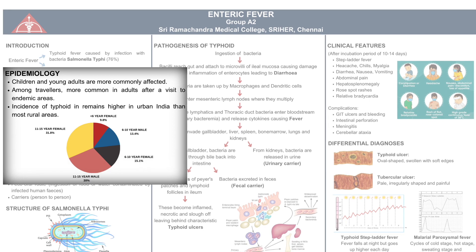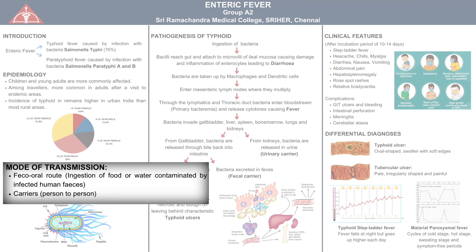Statistically, children and young adults are more commonly affected. Travelers who visit endemic areas are also commonly infected. There is usually a higher incidence of enteric fever in urban areas than rural. The mode of transmission of the bacteria is primarily feco-oral. Rarely, asymptomatic carriers may also spread the infection.